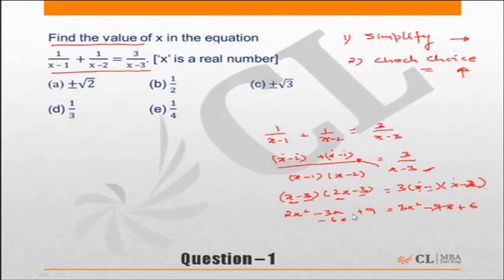Now this 9x and these 9x get cancelled out. So we will get that this will imply that x square is equal to 3, or x is equal to plus minus under root 3, which is choice C.